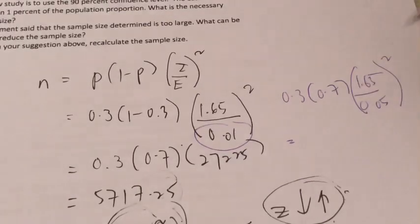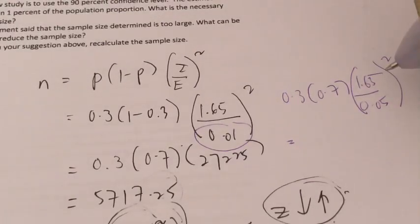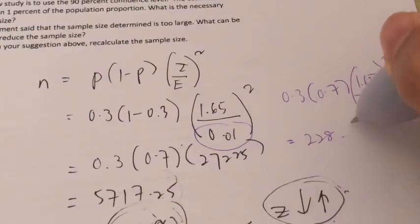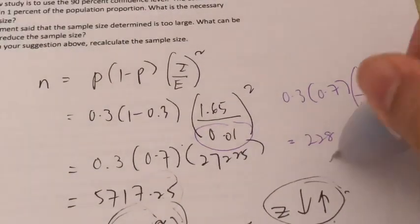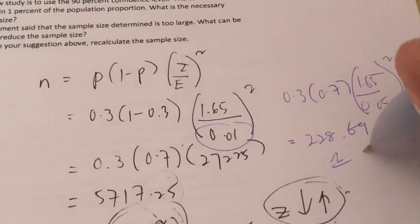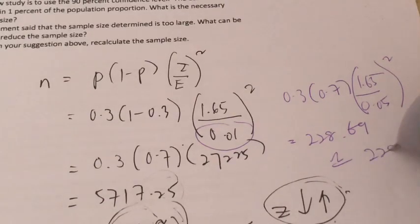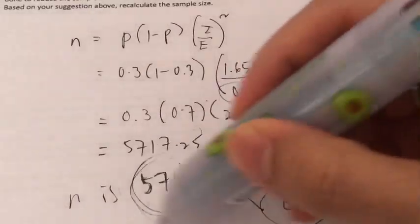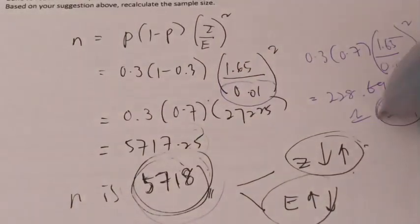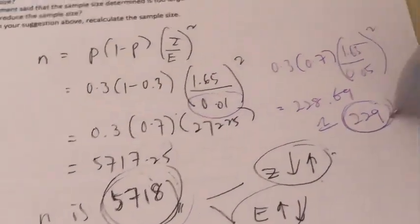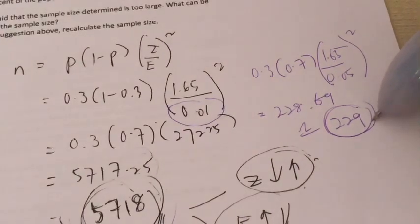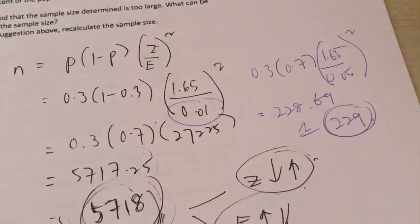So everything else is still the same: 0.3 times 0.7 times (1.65 over 0.05) squared. Calculating this, we get 228.69. To be safe, our sample size has now become 229. See, this is a very vast change from the original 5,718 — now we can just take a sample of 229 people at this casino. So I think we can make the management very happy.